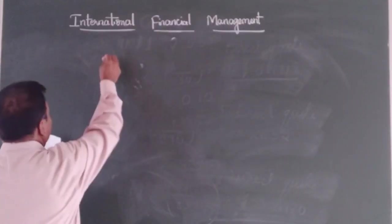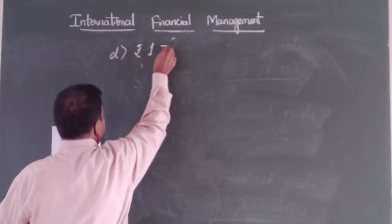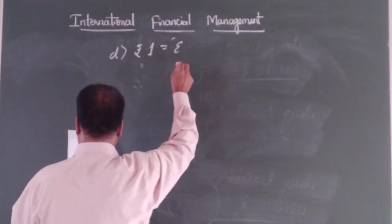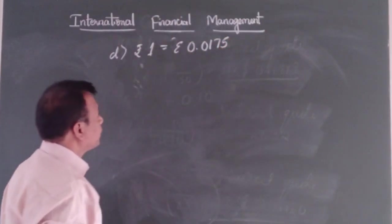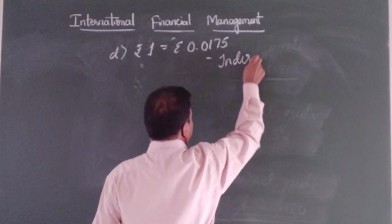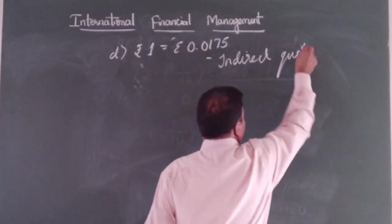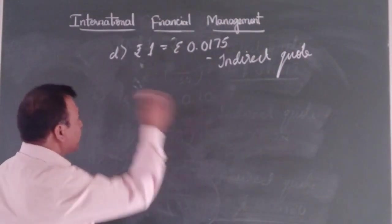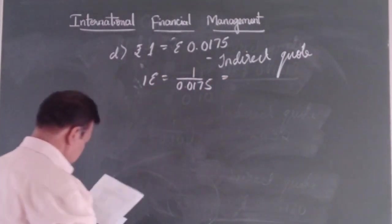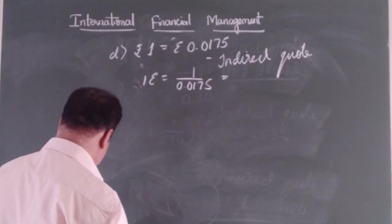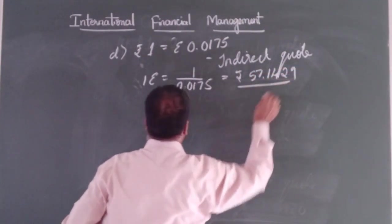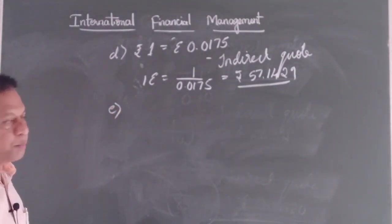The fourth one is: rupee 1 is equal to euro 0.0175. This is expressed in terms of home currency, so it has to be an indirect quote. To express it in terms of foreign currency, 1 euro is equal to 1 divided by 0.0175, which gives us rupees 57.1429. So 1 euro is equal to rupees 57.1429.